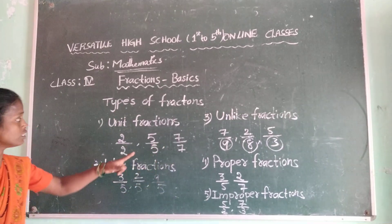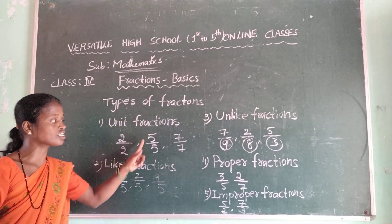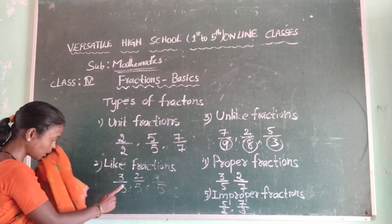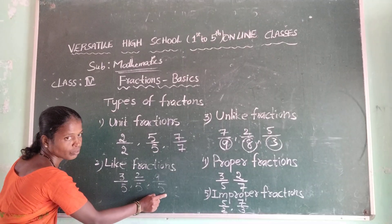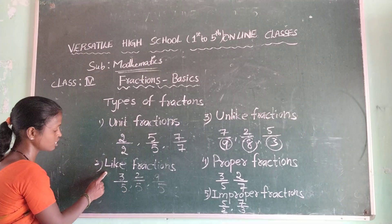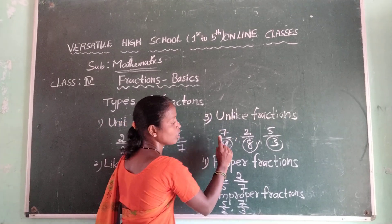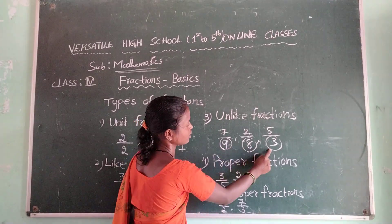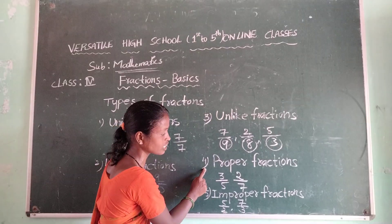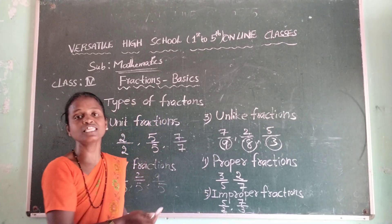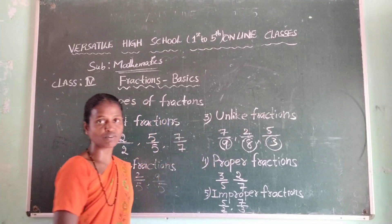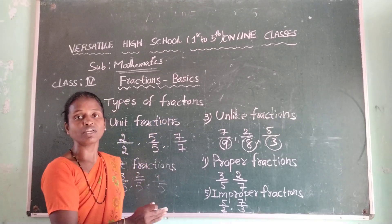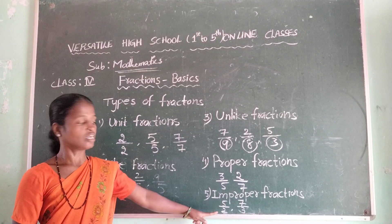Are you understanding? Let me review: in unit fractions, numerator and denominator are same. In like fractions, more than two fractions have the same denominator. In unlike fractions, more than two fractions have different denominators. In proper fractions, numerator is less than the denominator. In improper fractions, numerator is greater than the denominator.